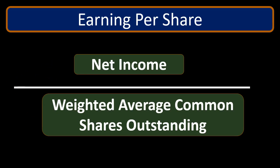So earnings per share is essentially net income divided by shares outstanding. You can think of it as taking the pile of money earned over the time period and dividing it by the number of shares, giving the amount of net income allocated to each share. If you owned one share you'd get that amount, and if you owned two shares you'd get twice that, each share being proportional.